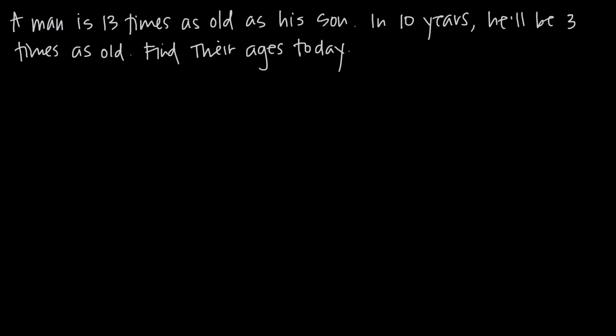In this video we're talking about age word problems, and these are just an application of what we already know about systems of equations. In this particular problem we've been told that a man is currently 13 times as old as his son, and that in 10 years the man will be three times as old as his son, and we need to find their ages today.